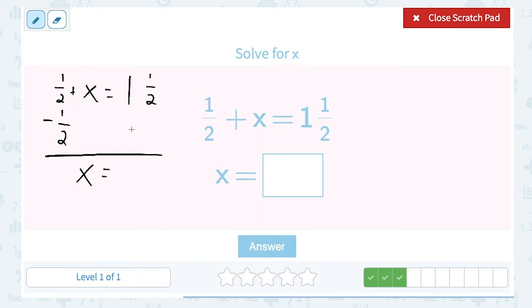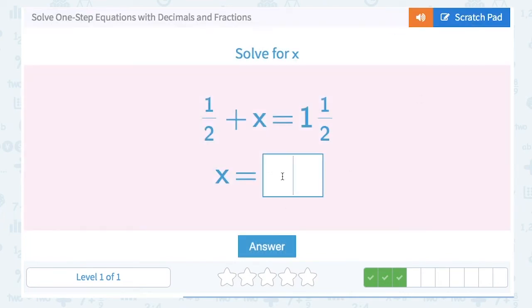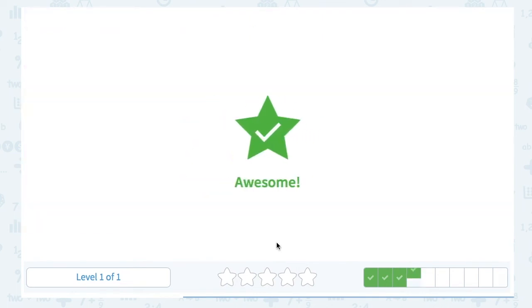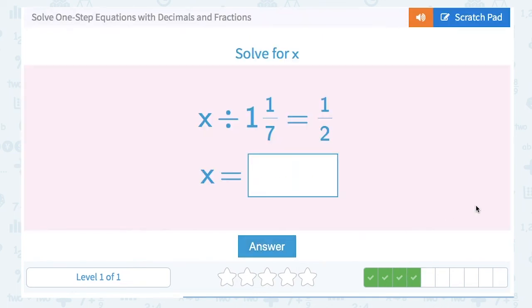Remember we always do the same thing on both sides of the equation. So 1 and 1 half minus 1 half: 1 half minus 1 half is 0, and that leaves me with the whole number 1.